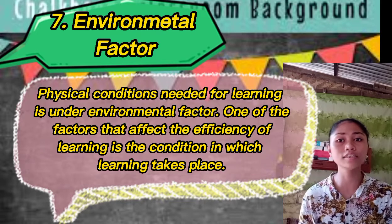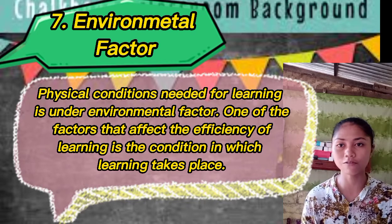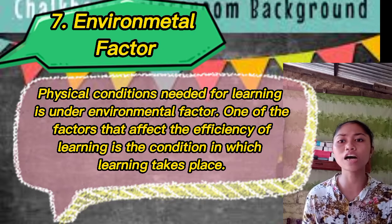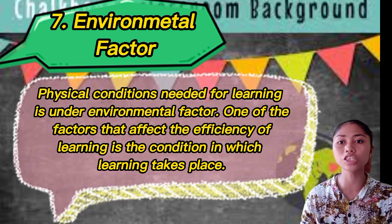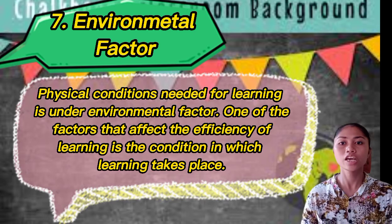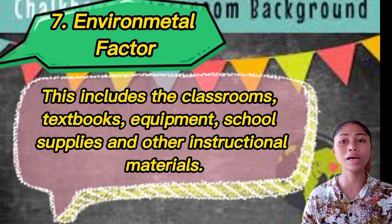Seventh is environmental factor. Physical conditions needed for learning fall under environmental factors. One of the factors that affect the efficiency of learning is the condition in which learning takes place. This includes the classroom, textbook, equipment, school supplies, and other instructional materials. So environmental factors really affect the learning process of the student.